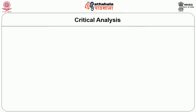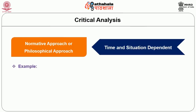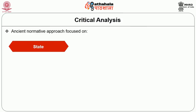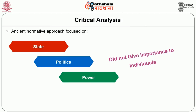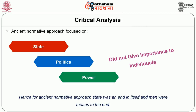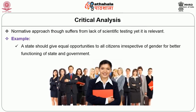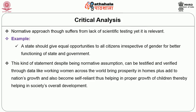Normative approach is dependent on time and situation. For example, when Aristotle was justifying slavery, it was relevant in that time and space but holds no relevancy now. Ancient normative approach focused on state, politics and power and did not give much importance to the individual. Hence, for ancient normative approach, state was an end in itself and men were means to that end. Normative approach, though suffering from lack of scientific testing, is still relevant. For example, a state should give equal opportunities to all citizens irrespective of gender — this statement, despite being normative, can be verified through data like the contributions of working women across the world.